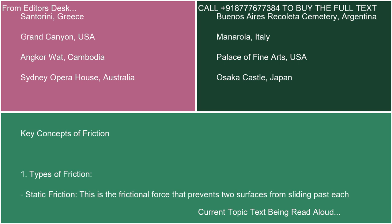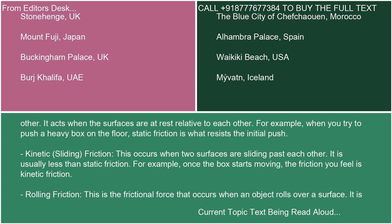Key Concepts of Friction. Types of Friction — Static Friction: this is the frictional force that prevents two surfaces from sliding past each other. It acts when the surfaces are at rest relative to each other. For example, when you try to push a heavy box on the floor, static friction is what resists the initial push.